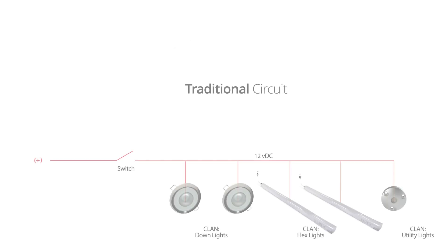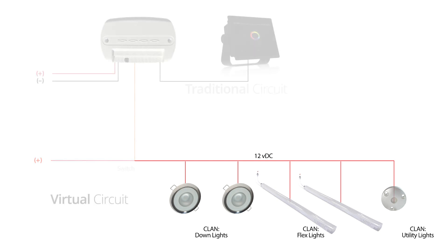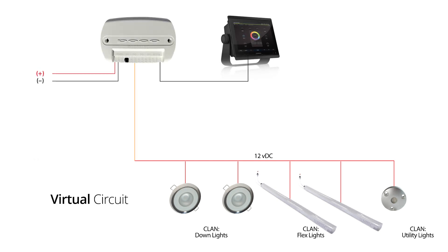On a traditional hard circuit, all lights receive the same command when the power is turned on — on, off, dimming, etc. However, lights that are compatible with the Poco system, meaning they have Lumitech's proprietary PLI technology built in, can be placed on the same physical circuit yet receive separate commands from the Poco module and behave differently.